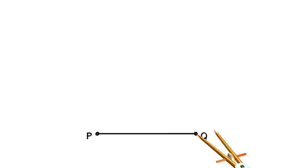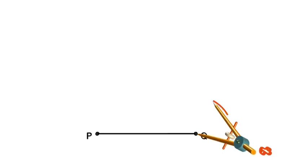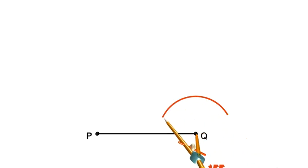So next we're going to construct a 120 degree angle at Q. So we're going to open our compass to a suitable radius and scribe a wide arc that must come around and cut the line PQ. So we scribe our wide arc and we ensure that it comes around and cut the line PQ.